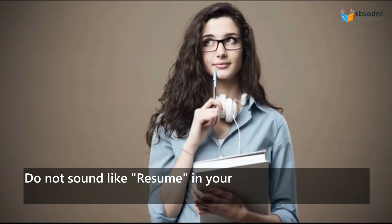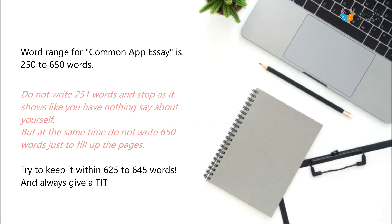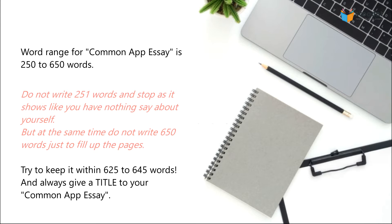Do not say 'I enjoy playing tennis and won many awards for my school or district,' because that just sounds like your resume — it doesn't help you at all. The Common App essay word range is 250 to 650 words. Do not write just 251 words, as it shows you have nothing to say about yourself. But at the same time, don't write 650 words just to fill up the pages — make every word count. Try to keep it within 625 to 645 words, and always give a title to your essay. That is really important.